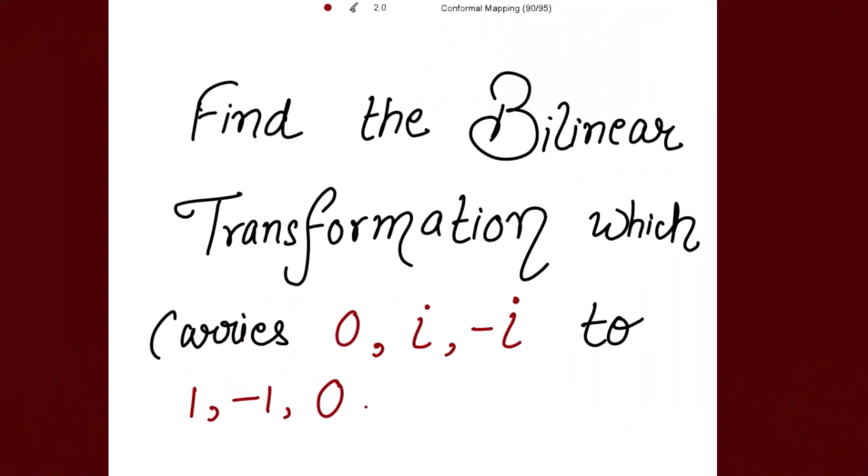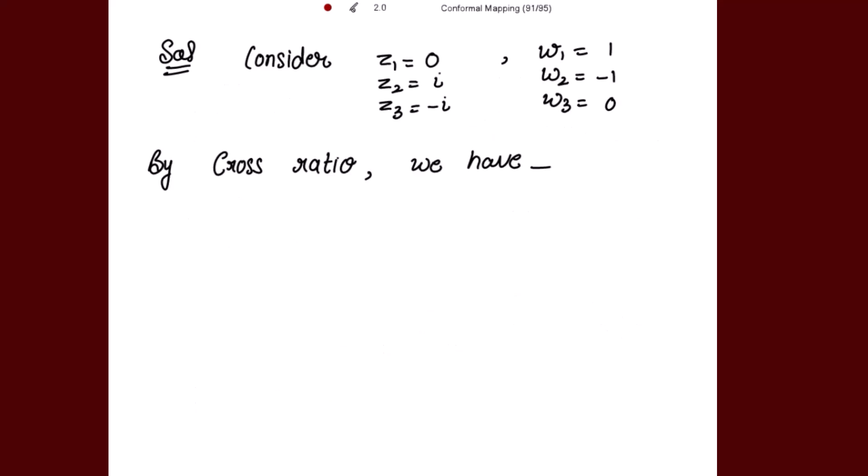We are going to find the bilinear transformation which carries the points in the z-plane as 0, i, -i to the points 1, -1, 0 in the w-plane. So let's consider z1 = 0, z2 = i, z3 = -i, and w1 = 1, w2 = -1, and w3 = 0.